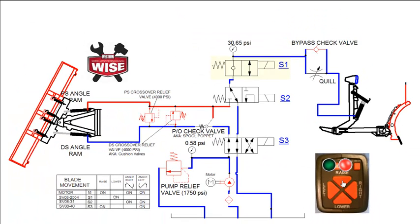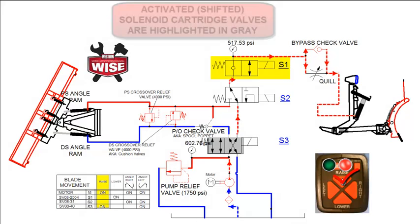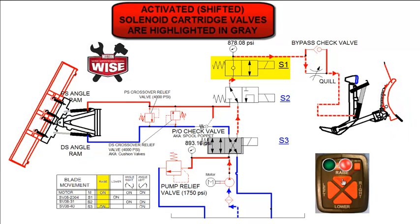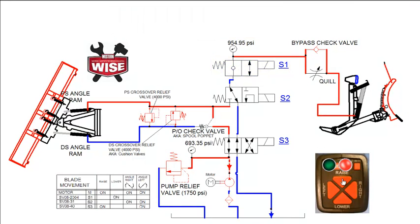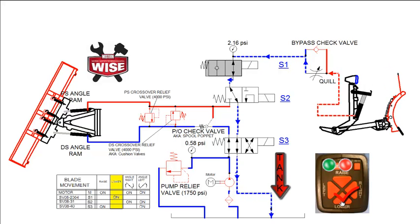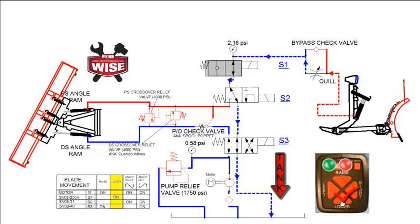The two-way valve, or S1, is used during the raise and lower circuit. For raise, fluid flows through the unshifted S1 valve on its way to the lift ram. When you let go of the raise button, fluid gets trapped by the check ball that is built into the S1 valve. Lowering the plow shifts the S1 cartridge, opening the path for fluid to get back to tank.